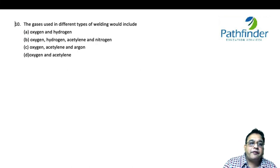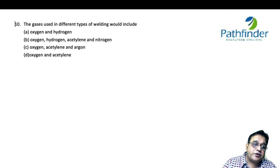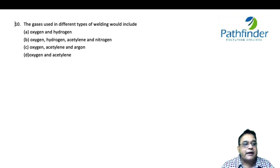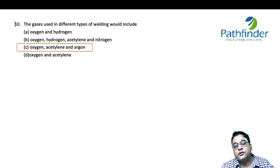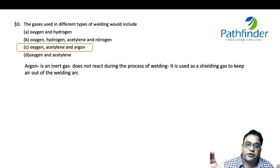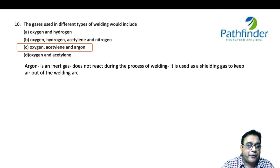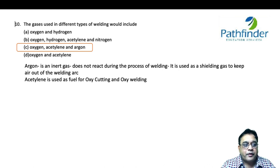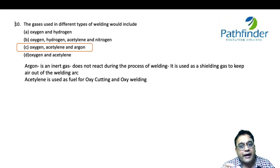The gases used in different types of welding — the options are oxygen and hydrogen; oxygen, hydrogen, acetylene, and nitrogen; oxygen, acetylene, and argon; and oxygen and acetylene. The correct answer is oxygen, acetylene, and argon. Argon is an inert gas used as a shielding gas during the welding process to keep air out of the arc of welding. Acetylene is used as a fuel for oxy cutting and oxy welding.